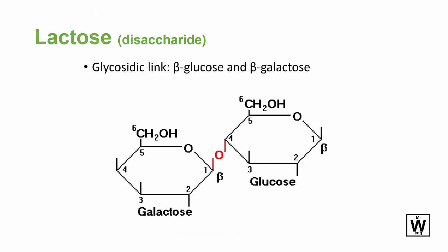The syllabus says you need to know how lactose forms. It doesn't seem to require which specific carbons are involved or whether they're D or L forms. Lactose is formed from beta glucose and beta galactose - galactose has the word 'lactose' in it, so it's associated with lactose. The beta forms will need to be learned.